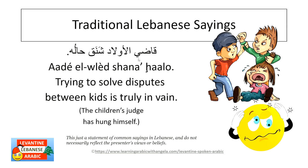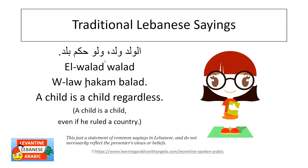Another funny saying: 'al-qadi lil-wlad shana halo' — the judge appointed for kids' disputes ended up hanging himself, meaning it's futile to try to settle disputes between children because at that age they can't react logically. And: 'walad walad walau hakam balad' — a child is a child even if he ruled a country, meaning kids will be kids no matter what.